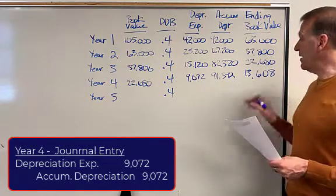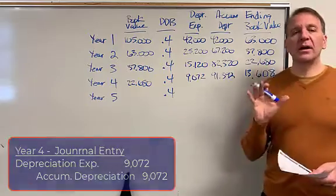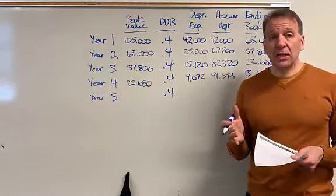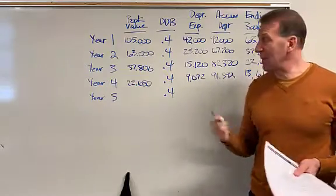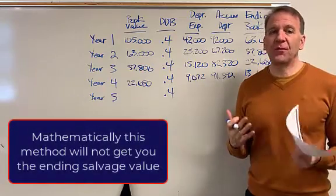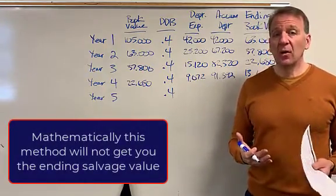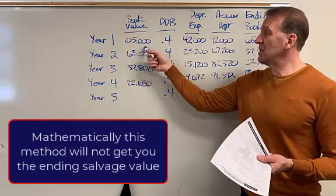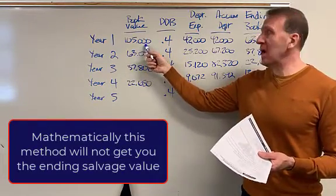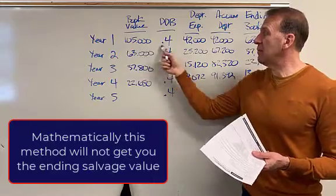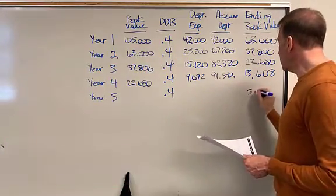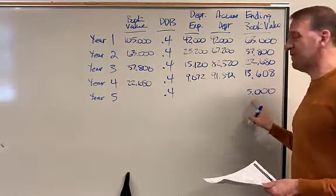Now for year five, this is where it's a little bit different because mathematically, this method doesn't work. I mean, we're doing math, but mathematically it doesn't work. So we have to force it to work at the end. Remember, we didn't take into consideration the salvage value. We just started with the full book value and we depreciated it based off of the full book value. Remember at the end, we want a salvage value. We want this to be worth $5,000. That was given.